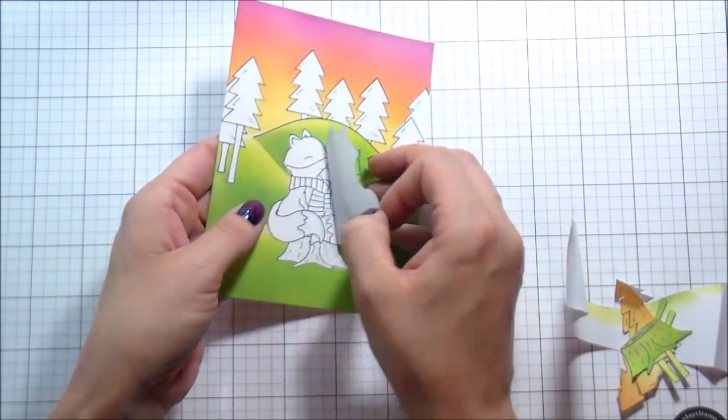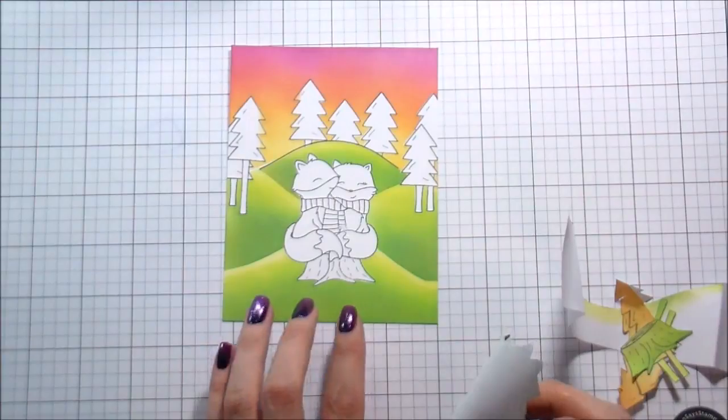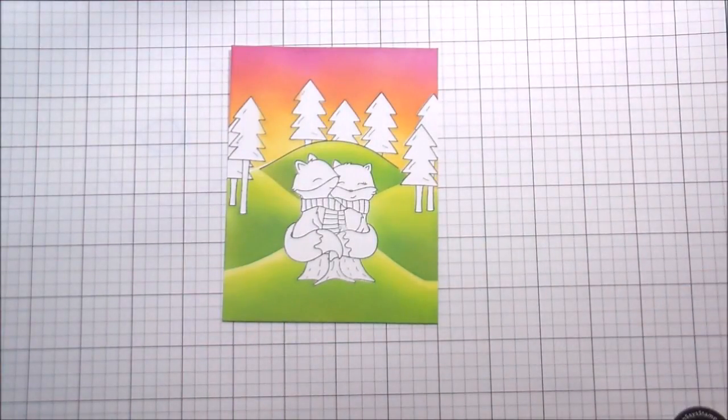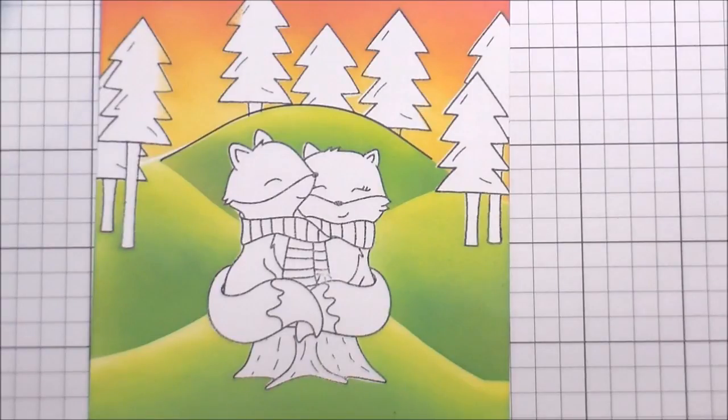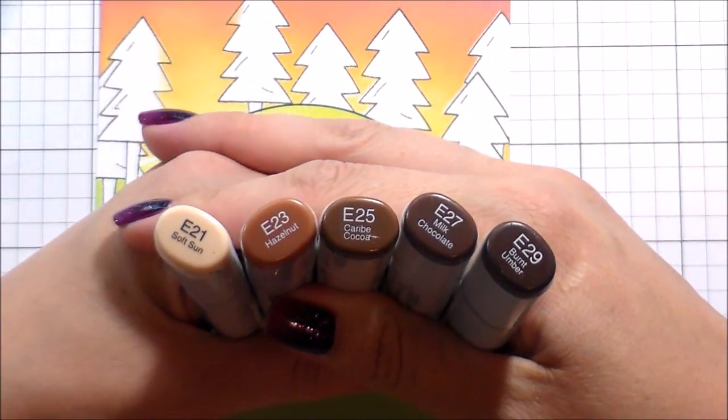Here we're going to remove all the masks. You can see how those hills came out. Once we get this little fox mask off, you'll really see how it kind of looks like they're sitting on top of this little hill in this valley. I love it. I love the way that it came out. And then we're going to get into the Copic coloring.